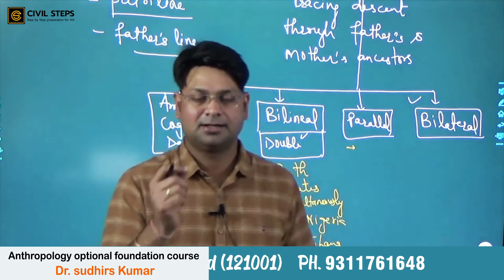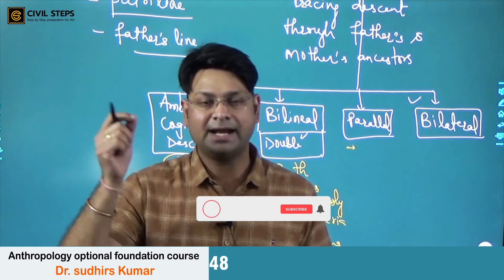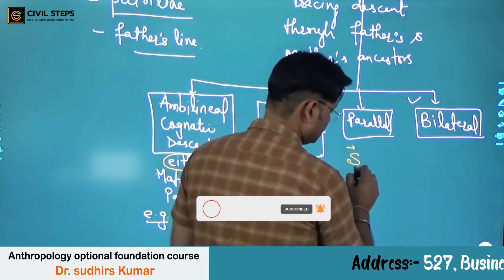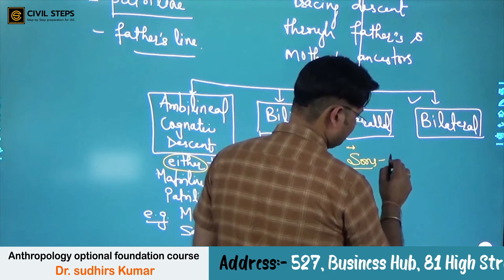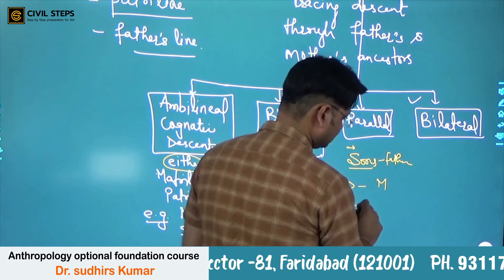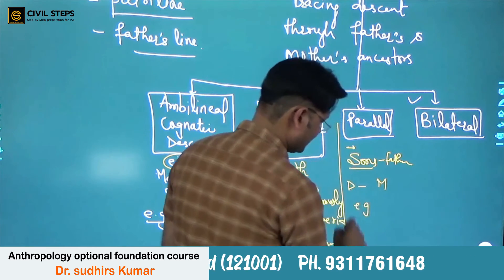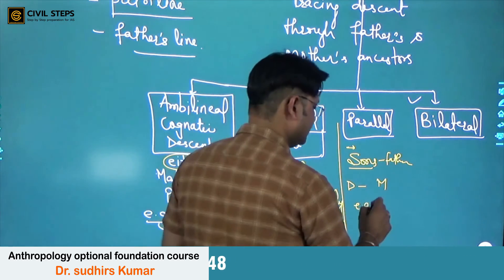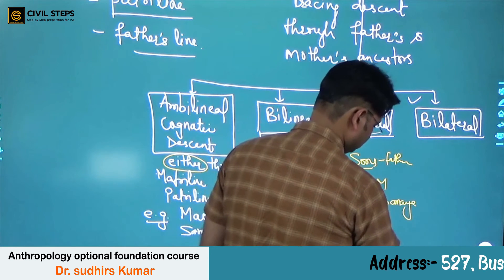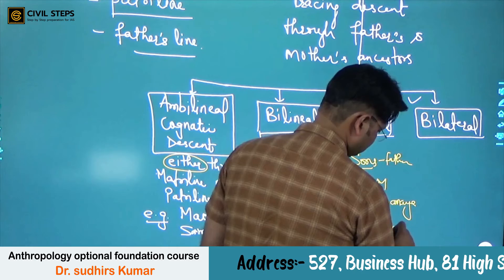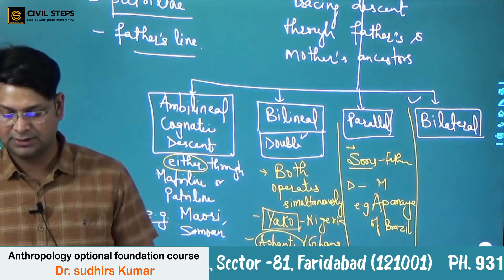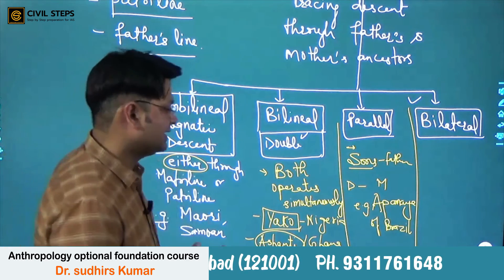Parallel descent means that sons inherit from the father and daughters inherit from the mother. So descent follows gender lines in parallel.